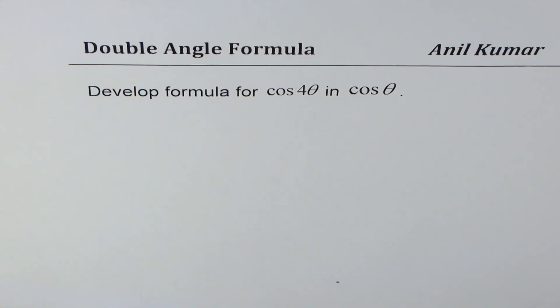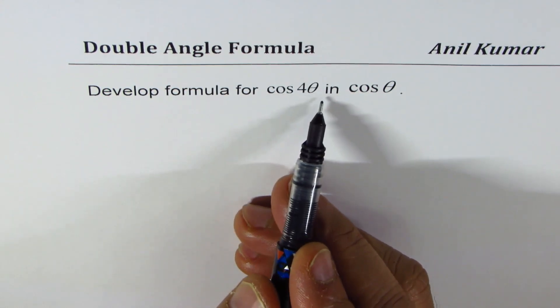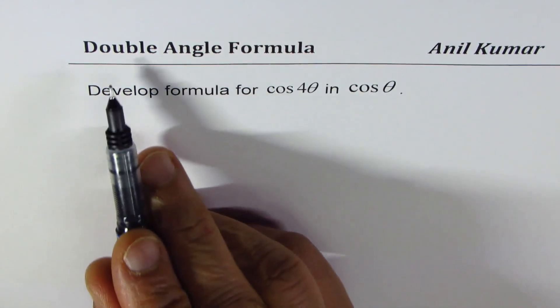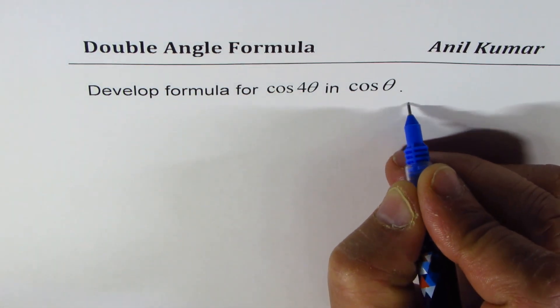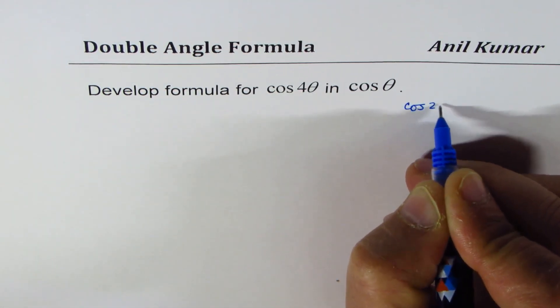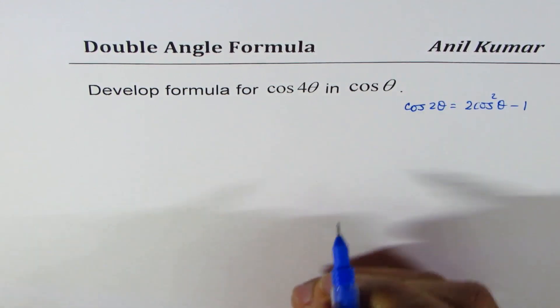I am Anil Kumar and in this video we will develop a formula for cos 4θ in terms of cosine θ. We are going to use the double angle formula which is cos 2θ equals 2 cos²θ minus 1.